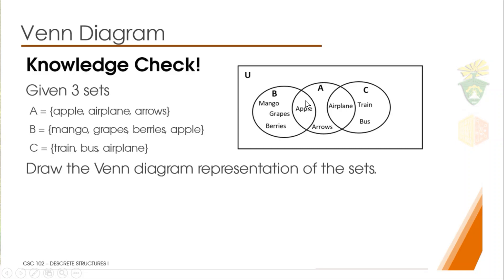The only unique elements in B are mango, grapes, and berries. And apple, since it also belongs in set A, we overlap set A and set B, and in the overlap we put the apple. Now the only element found in set A that is not found in the other sets is only the arrows.